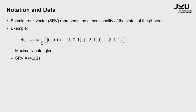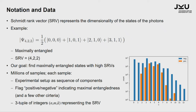Our quantity of interest was the Schmidt rank vector, which represents the dimensionality of the states of photons. For example, consider a state with three photons: 0,0,0 then 0,0,0 then 1,0,1 then 2,1,0 then 3,1,1. This is a maximally entangled state, and its Schmidt rank vector is four, two, two — because Alice's photon uses up the four-dimensional space (zero, one, two, three), Bob's photon lives only in zero and one, and Charlie's photon also uses only zero and one. Our goal was to find maximally entangled states with high Schmidt rank vectors such as seven, eight, nine, ten, and so on.